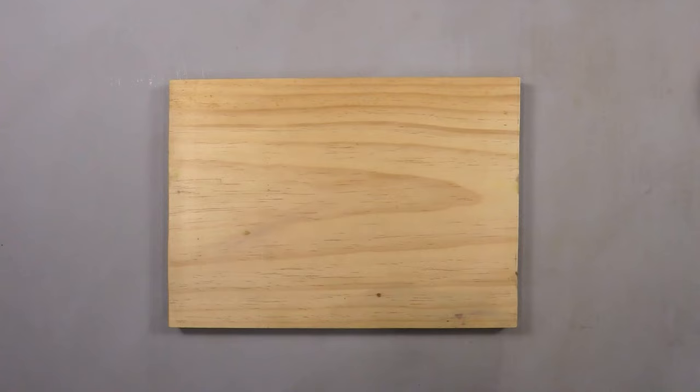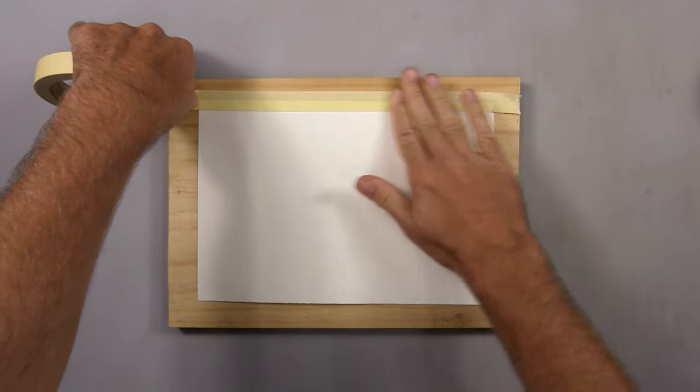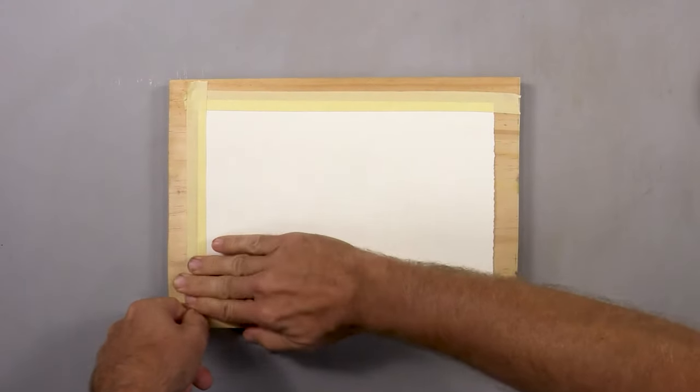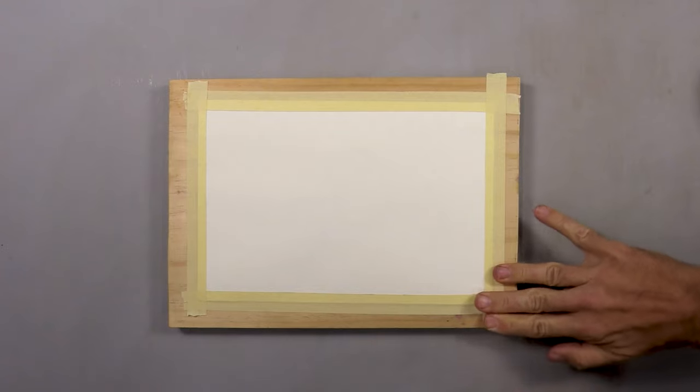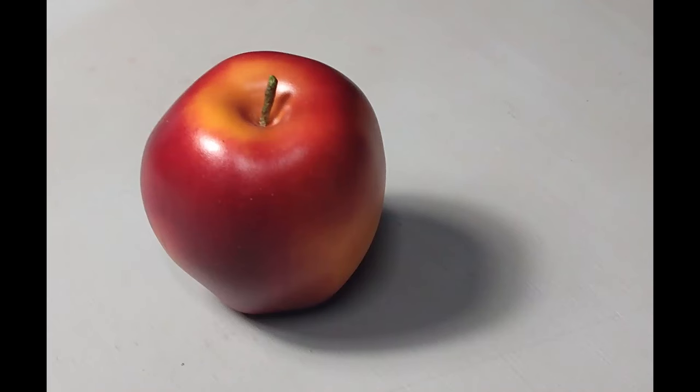Let's get started. First, I'll tape down the edges of my watercolor paper to my painting board. Here's an image of the apple that I'm going to draw and paint today. It's an artificial apple. You can use an apple that you have at home, or if you don't have one you can use this image for this painting.